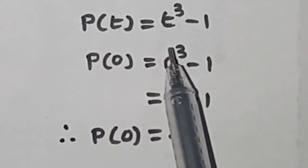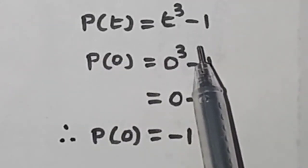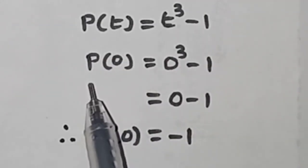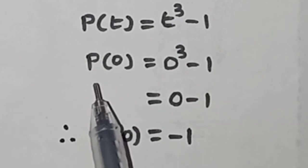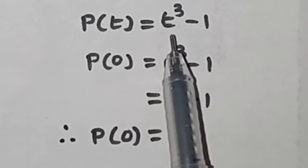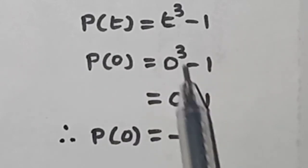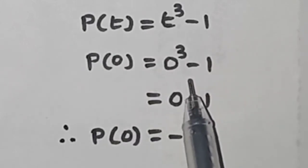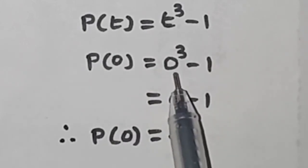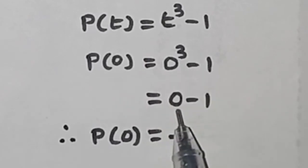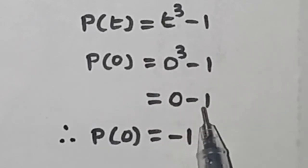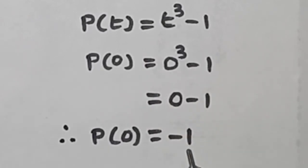P of t is equal to t cube minus 1 is given. Find the value of P of 0. P of 0 is equal to: instead of t here is 0, t cube means 0 cube, minus 1 as it is. 0 cube is 0, minus 1. 0 minus 1 is minus 1. Therefore, P of 0 is equal to minus 1.